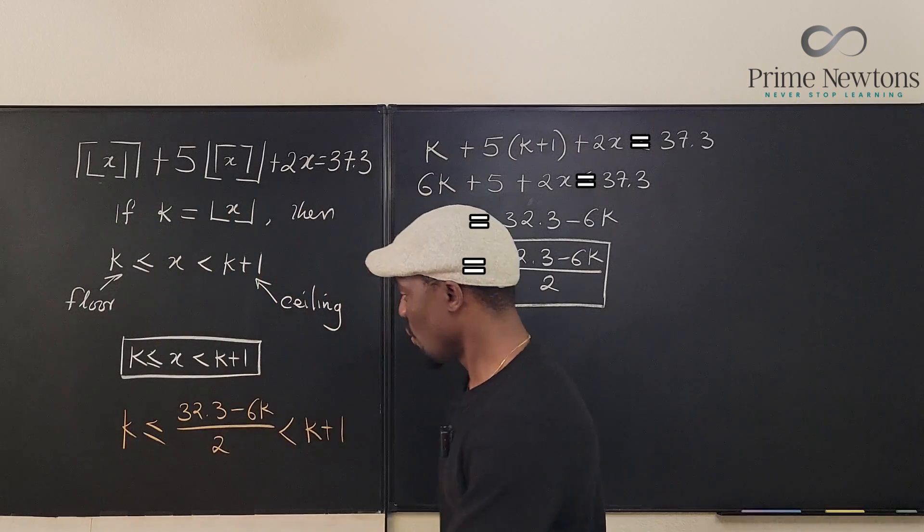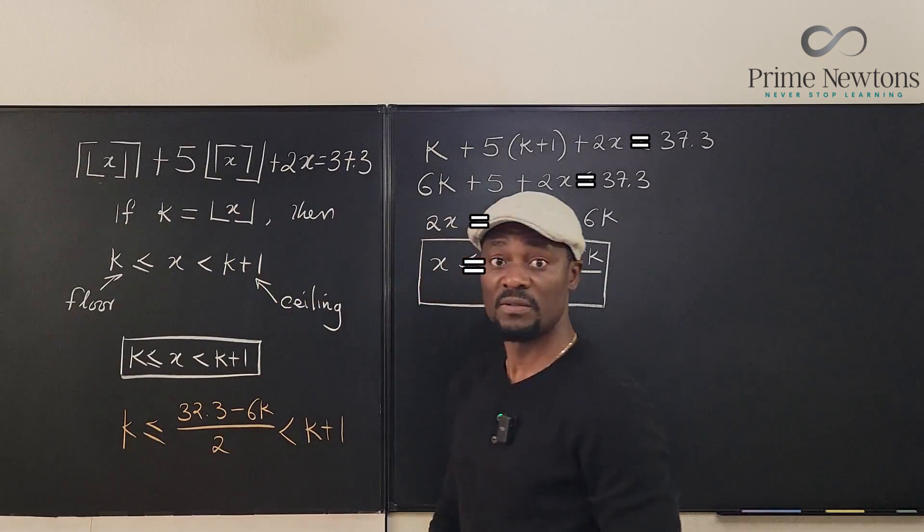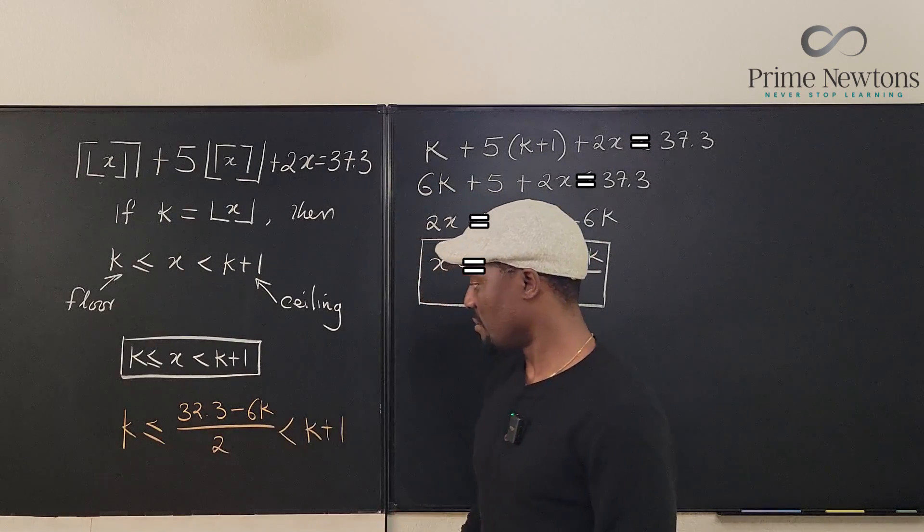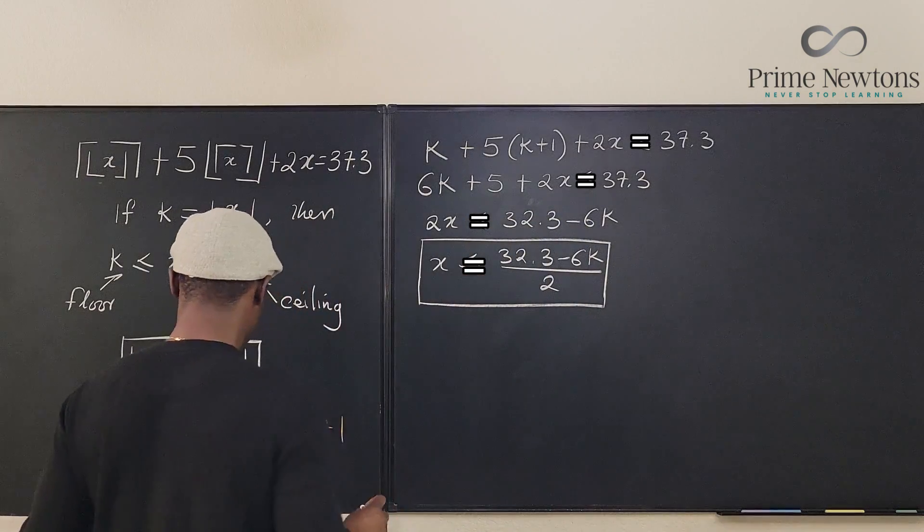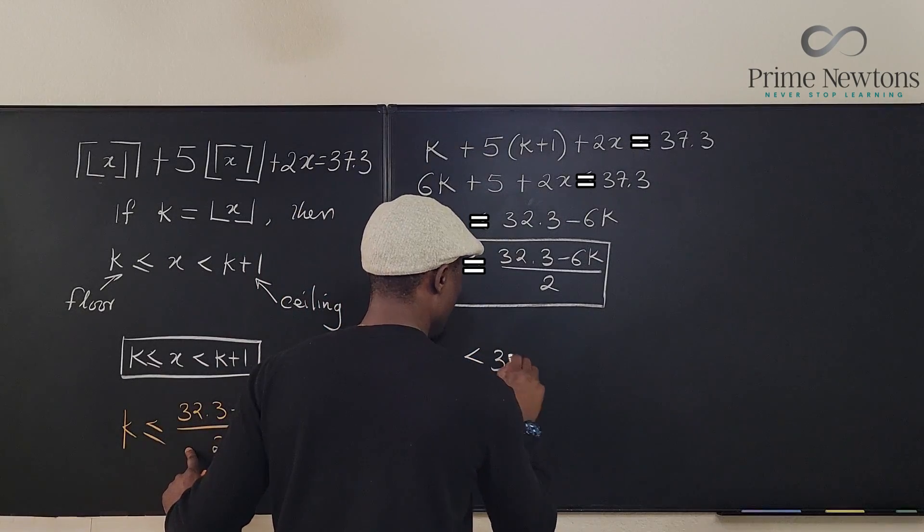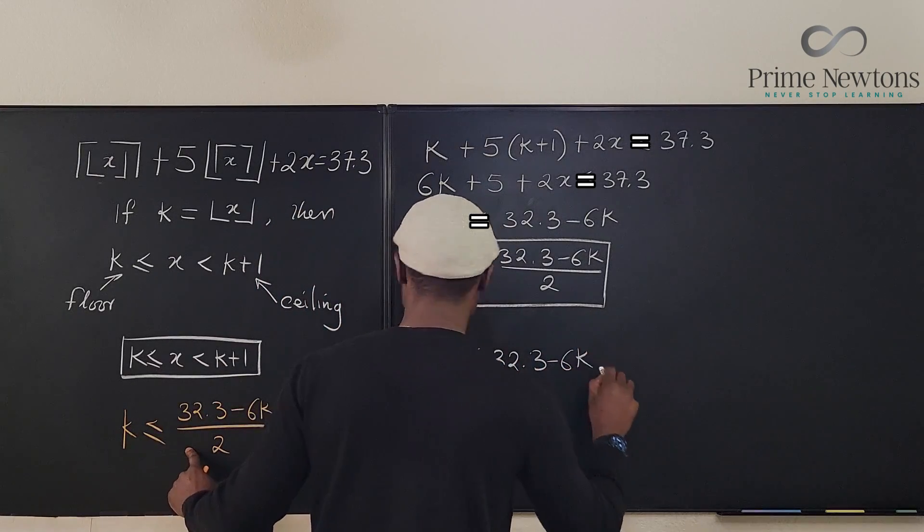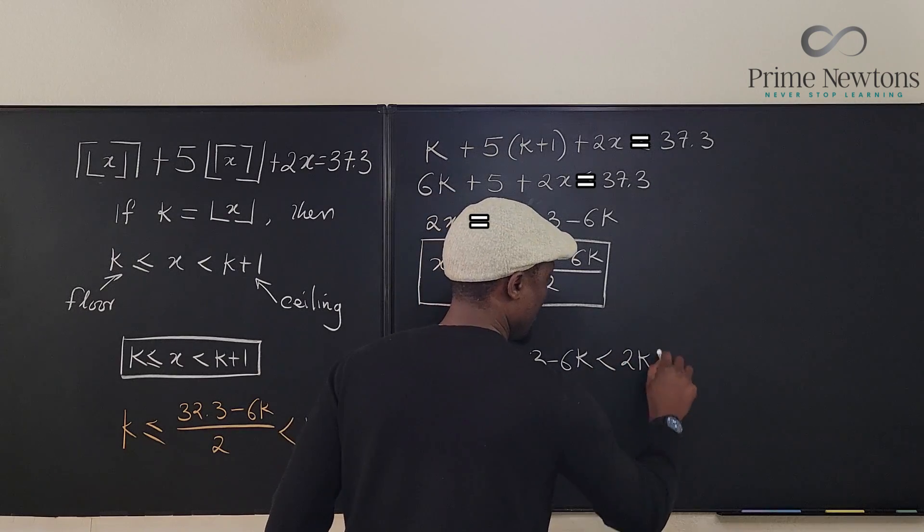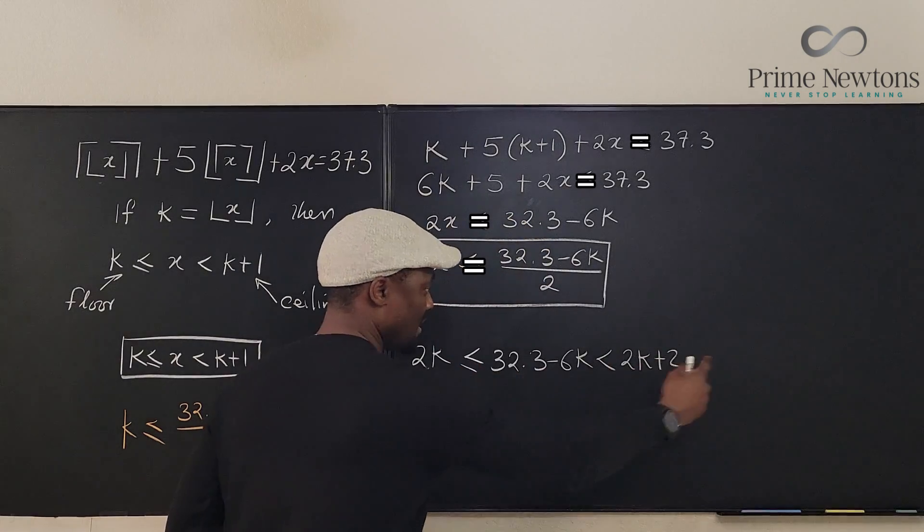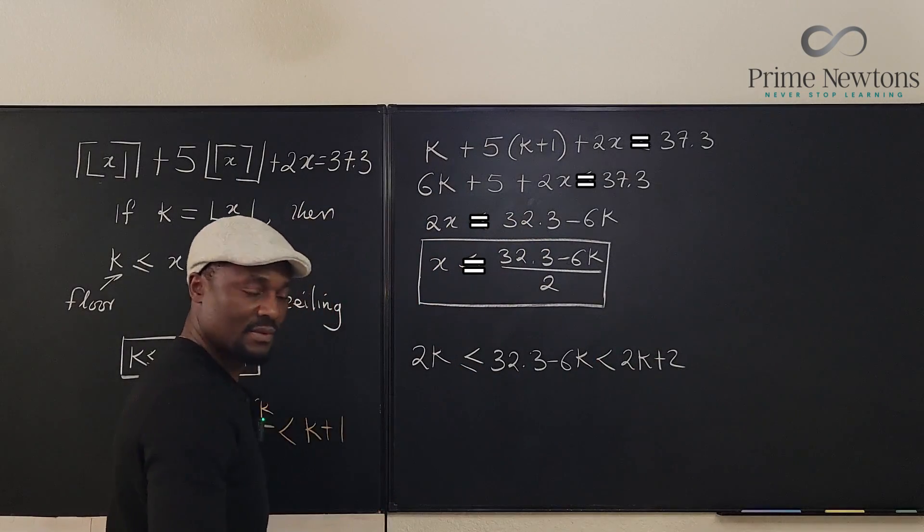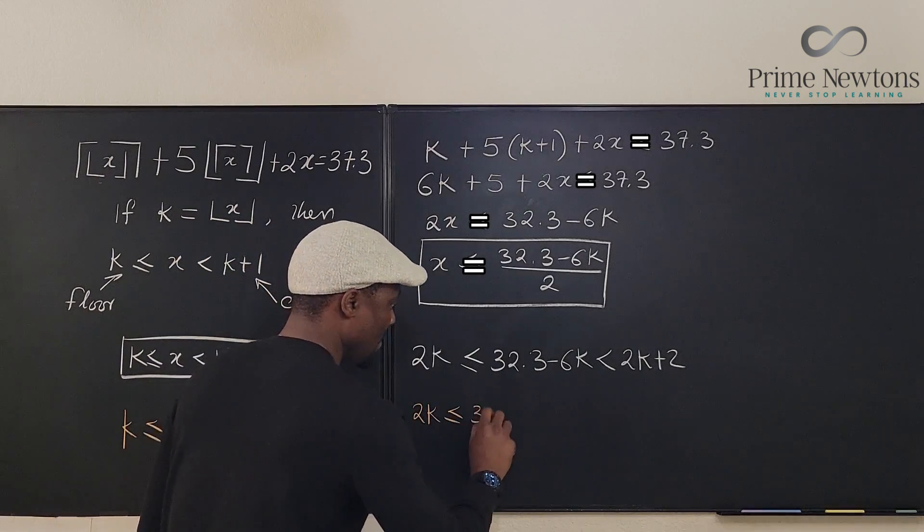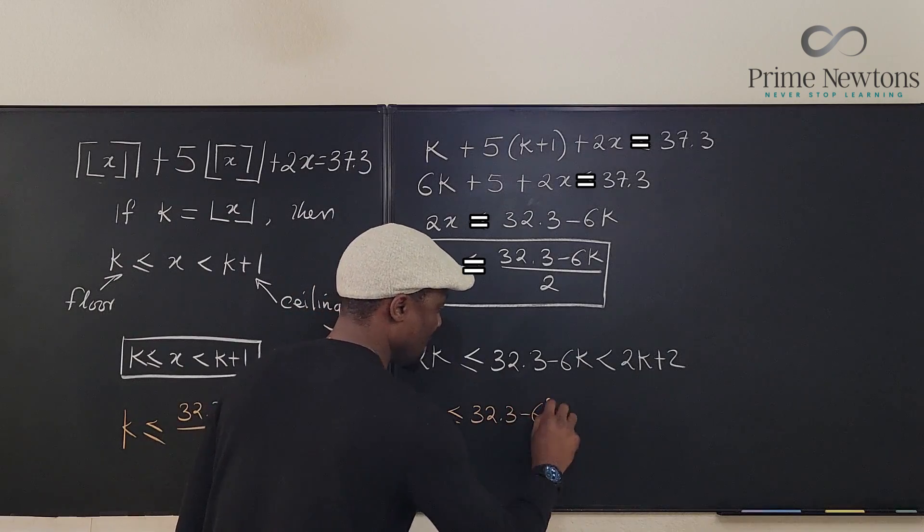So with this we can have two different inequalities that we're going to solve and find what k could possibly be. So let's start. I can multiply both sides by 2. Let's do that here, so we can go here and say 2k is less than or equal to 32.3 minus 6k, and it's strictly less than 2k plus 2. So I have multiplied this by 2, multiplied this by 2, multiplied this by 2, and this is what I have. So let's take this part here. We have 2k is less than or equal to 32.3 minus 6k.